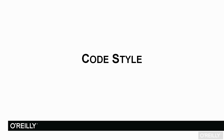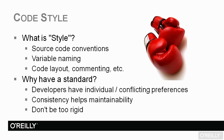To begin our best practices, let's talk about code style. When we talk about code style, what are we really talking about? We're actually talking about source code conventions — how we name our variables, how the code is laid out, the commenting, and basically how the source code looks and how we as developers work with it.